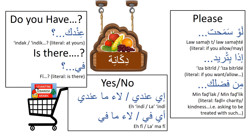Now let's imagine we're inside the little shop — 'ad-dukkaane.' Of course you can say 'please' and everyone will understand, but you can also use polite Lebanese phrases such as 'law samahit' for a man or 'law samahti' for a lady — literally meaning 'if you allow' or 'if you may.' Another phrase: 'iza btreed' — if you want — or 'iza btreedi' for a woman.